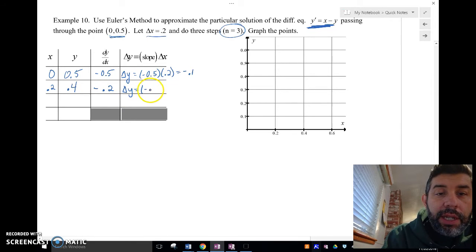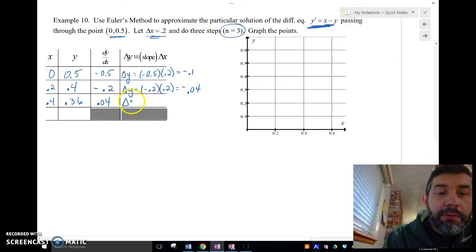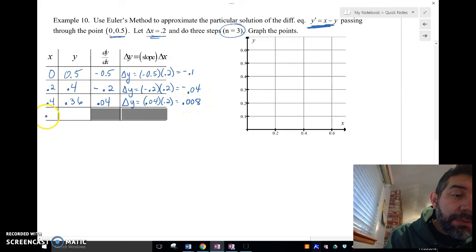Delta y equals negative 0.2 times 0.2 equals negative, we got 0.04 this time. So then, now I'm going to get 0.4. Remember how do I get that? I added delta x. I subtract 0.4 minus 0.04 because I got a negative. So I'm going to get 0.36. Plug those into my x minus y for my dy/dx. I'm going to get 0.04. So I get 0.04 times 0.2, which is 0.008. 0.6, 0.368 because I added this plus that and I got that.